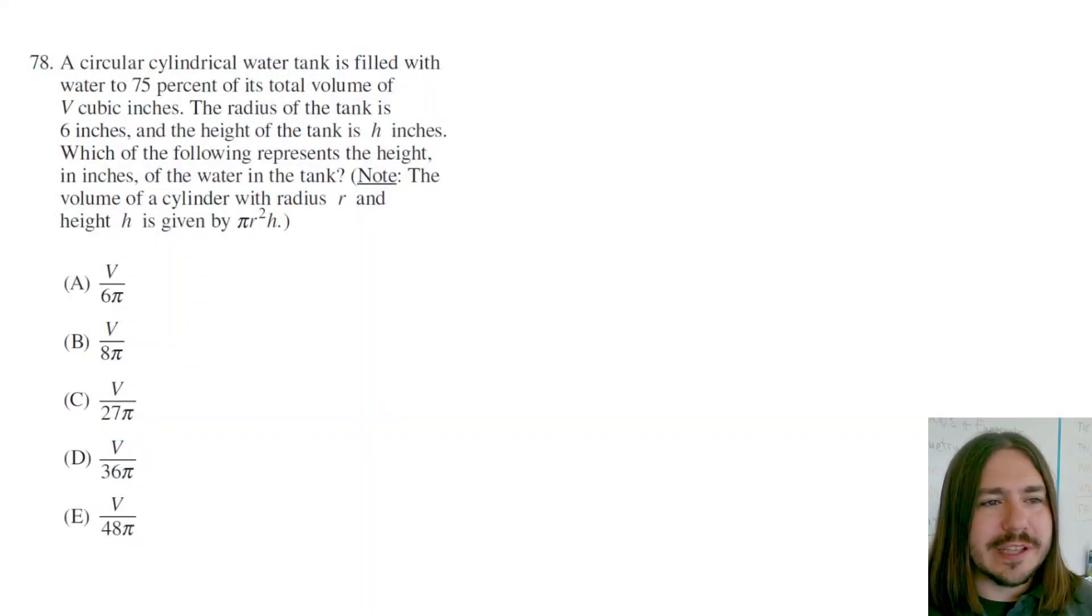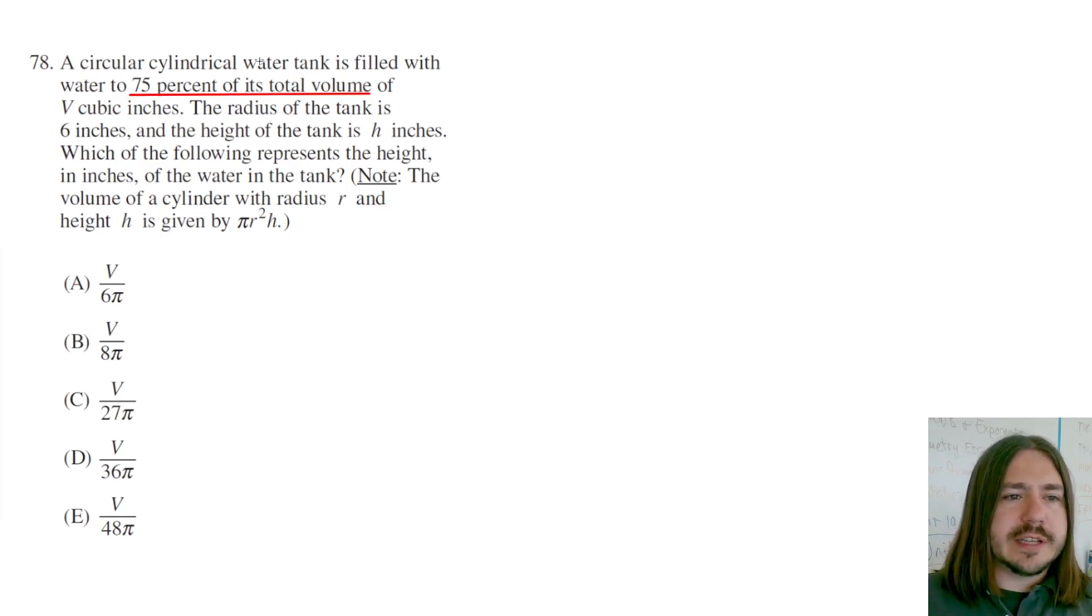Hey y'all, welcome back. Number 78 says a circular cylindrical water tank is filled with water to 75% of its total volume of cubic inches. This is going to be important. The radius of the tank is 6 inches and the height of the tank is h inches. Which of the following represents the height in inches of the water in the tank?